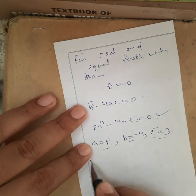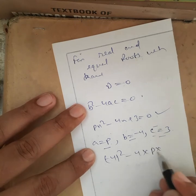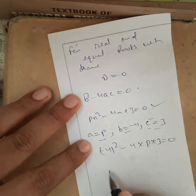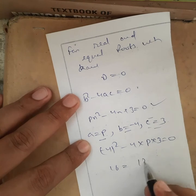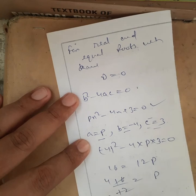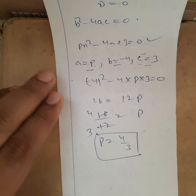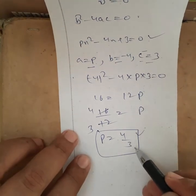Now replace all these values in the discriminant. We get (-4)² - 4 times p times 3 = 0. So 16 = 12p, p = 16/12, that is 4/3. So p = 4/3.